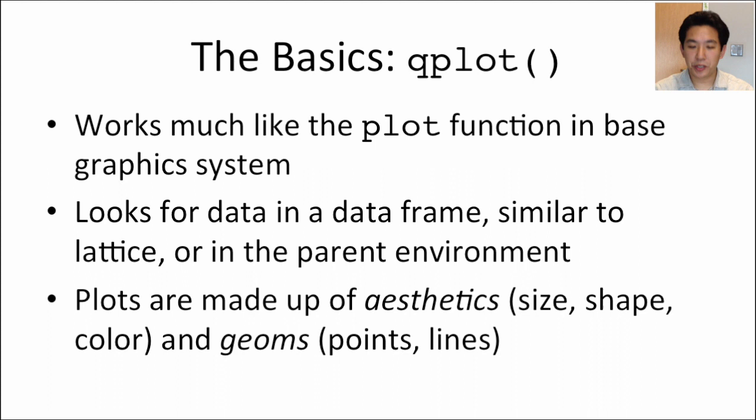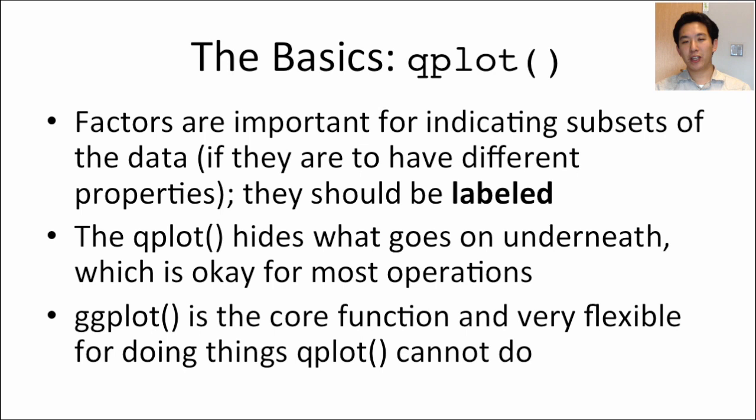Once you start plotting, the plots are made up of aesthetics and geoms. Aesthetics are things like the size, shape, and color of points, and the geoms are the objects you're plotting — are you plotting points, lines, or bars? One important aspect for the qplot function, and similarly for lattice, is the use of factor variables. Factors are very important because they indicate subsets of your data.